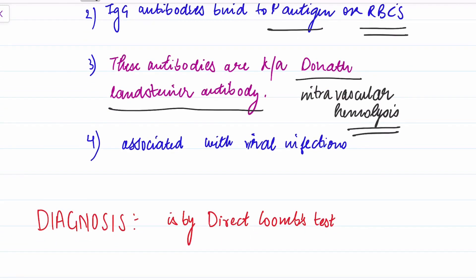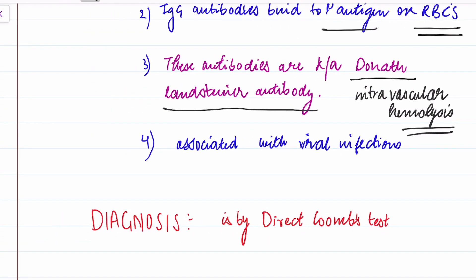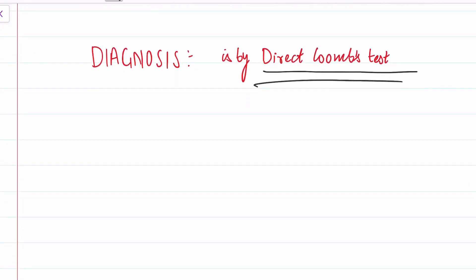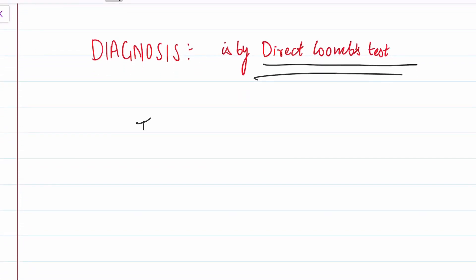Paroxysmal cold hemoglobinuria most commonly occurs in children. Diagnosis is by the direct Coombs test. Thank you friends for watching this video — do like my video and all the best for your preparation.